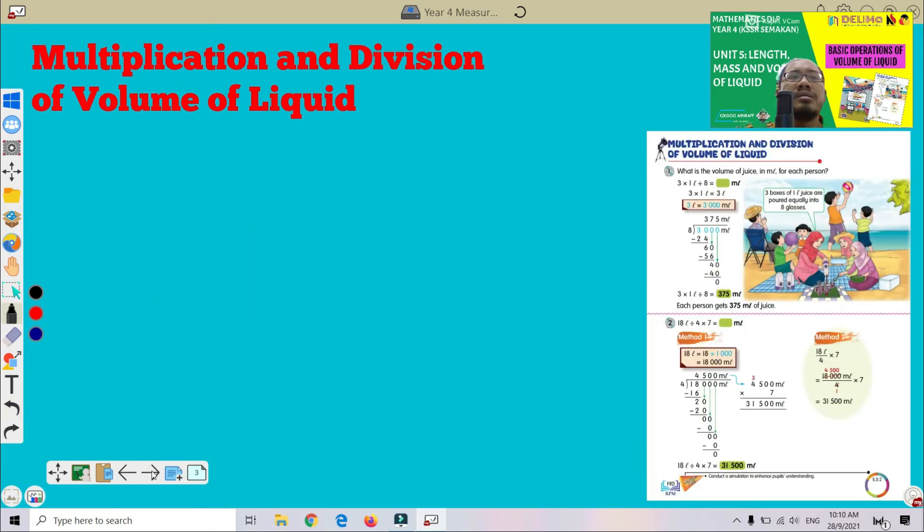Now let's go to the next page 190 in your textbook. This is multiplication and division of volume of liquid. Let's try question number 2. 18 liter divided by 4 multiply by 7. The answer should be in milliliter.